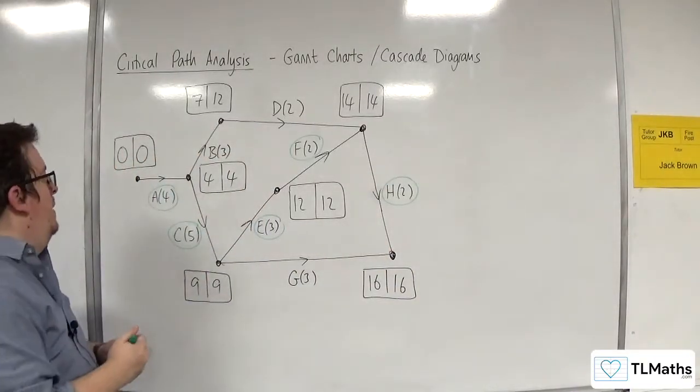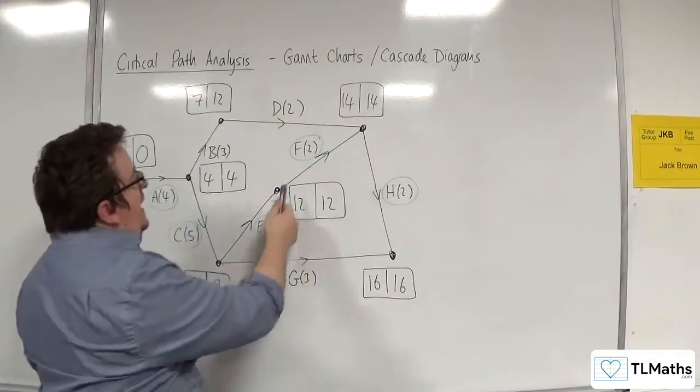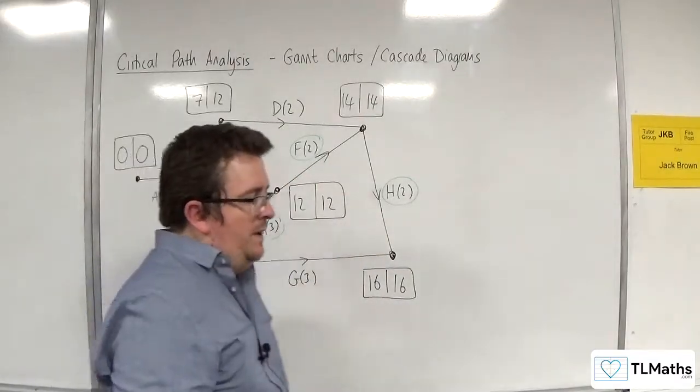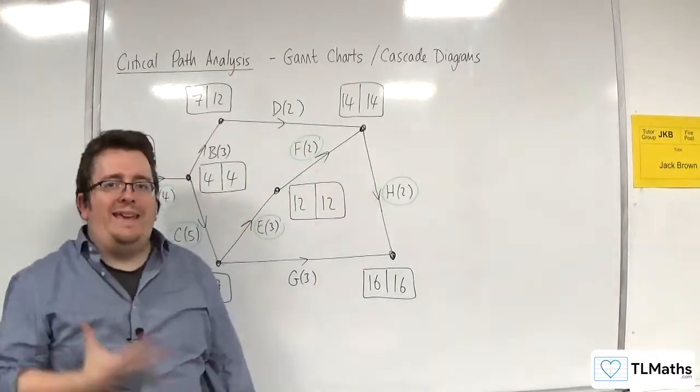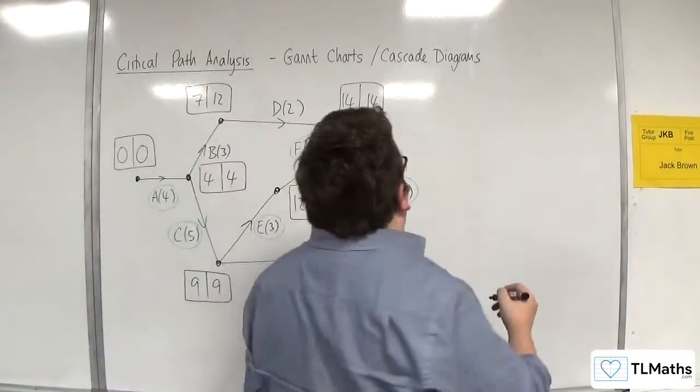So we've got a critical path: A, C, E, F, H. That's what we use to start off with. So what does a Gantt chart or cascade diagram look like?